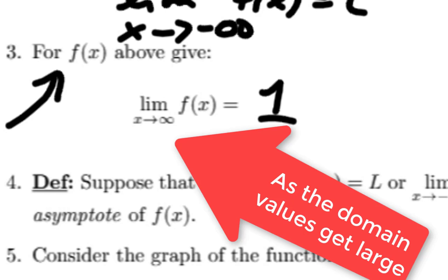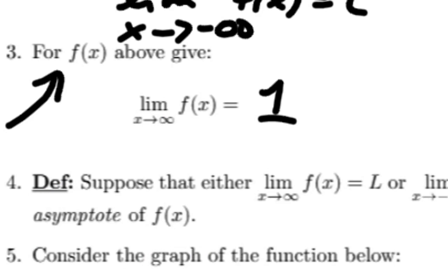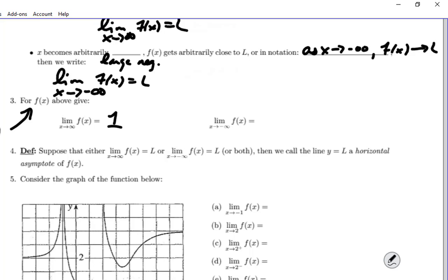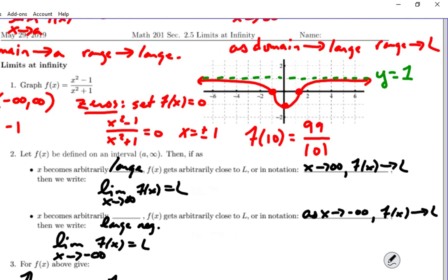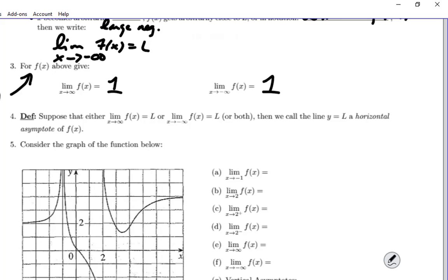The domain values get large, we find that the y values approach 1. Let's read that together. As the domain values get large, the y values approach 1. Do you see that these limits make a lot more sense if you read them aloud? So practice doing that. If you see limit x arrow infinity f(x) equals 1, if that's how you're saying that to yourself, you're never going to fully grasp the notation. What do we find here? As the x values go far to the left, what do the y values appear to also be approaching? 1 as well.